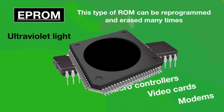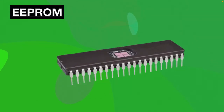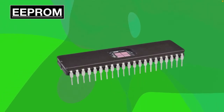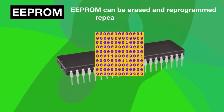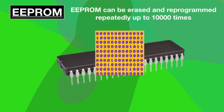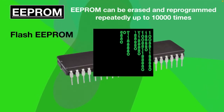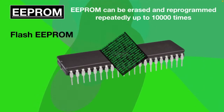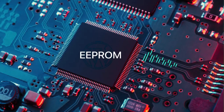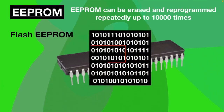EEP-ROM, Electrically Erasable and Programmable Read-Only Memory, is a type of ROM that can be erased and reprogrammed repeatedly — up to 10,000 times. It is also known as Flash EEP-ROM because it is similar to flash memory. EEP-ROM can be erased and reprogrammed electrically, without using ultraviolet light.